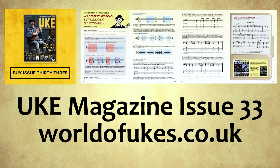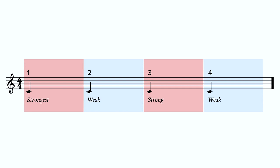So what is syncopation? Simply put, syncopation adds rhythmic interest by shining the spotlight on weak beats and drawing attention away from stronger beats, creating more complex rhythms. The convention is that the strongest beat of the bar is the first beat, or downbeat. In a 4/4 time signature, the third beat is also quite strong.